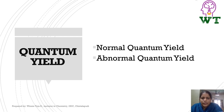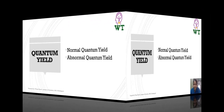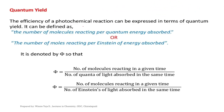In this video, I am going to discuss the topic of quantum yield. The efficiency of a photochemical reaction can be expressed in terms of quantum yield or quantum efficiency. It can be defined as the number of molecules reacting per quantum of energy absorbed, or the number of moles reacting per Einstein of energy absorbed.